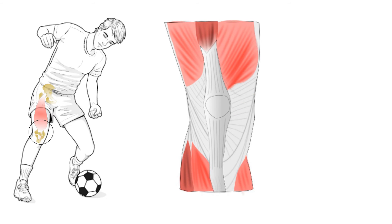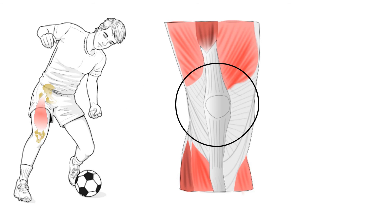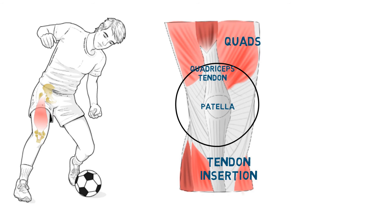Looking at this picture, which represents the knee with the skin stripped off, one can appreciate the patella within the tendon of the quads. The bit of tendon above the patella is called the quadriceps tendon, and the bit below is called the patella tendon.